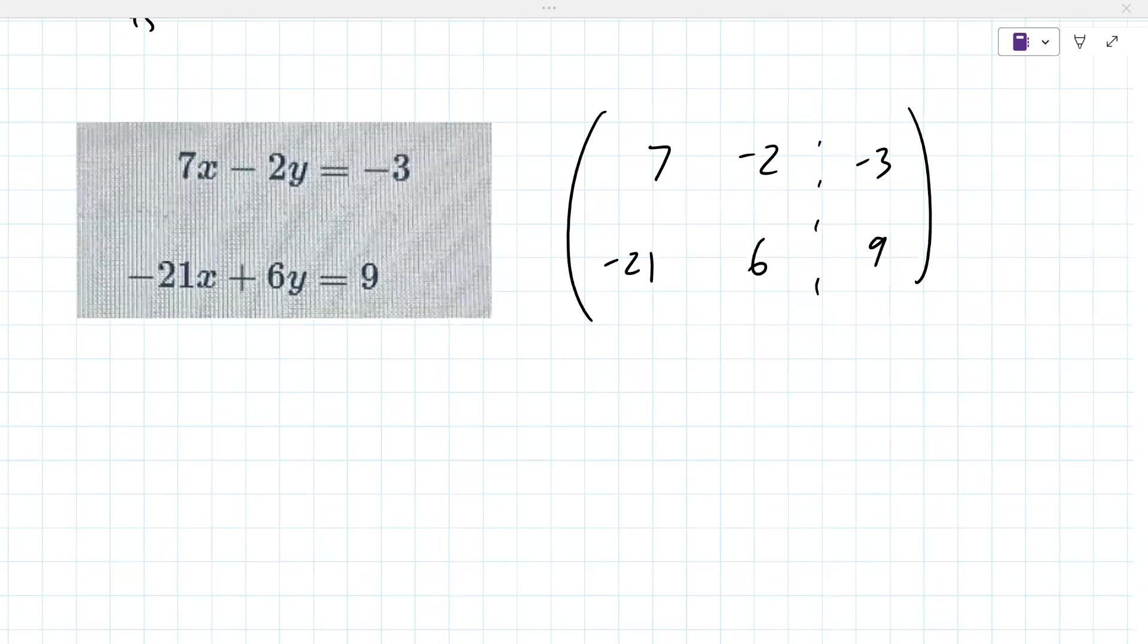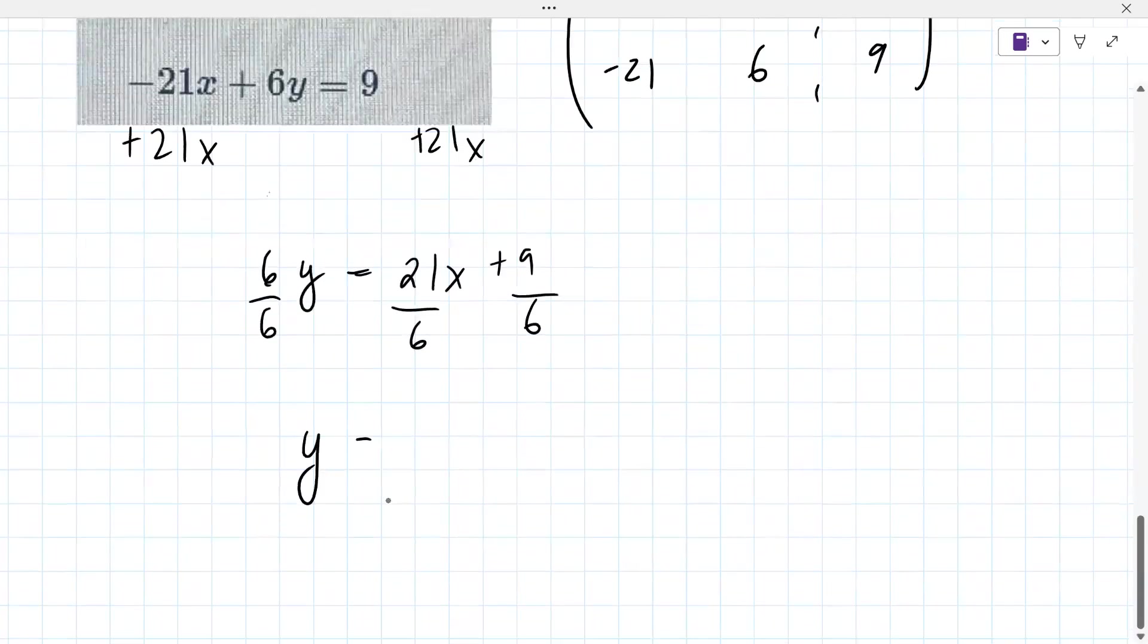That didn't come out nice. Let me see, 7, negative 2, negative 3, negative 21, 6 and 9. Yeah, so the answer here is that they want you to enter it as a line. So you just have to solve one of these equations for y. I'll solve the second equation for y. So we have adding 21x to both sides, 6y equals 21x plus 9, divide by 6. y equals 7 over 2 x plus 3 over 2.